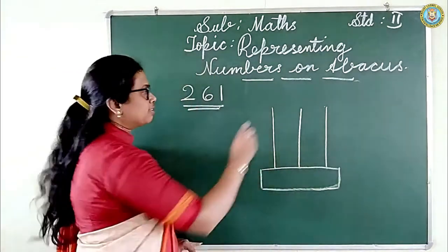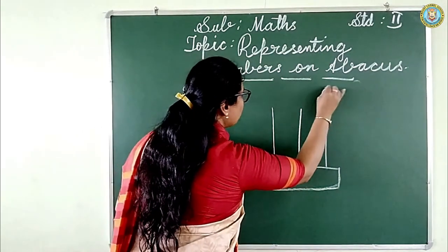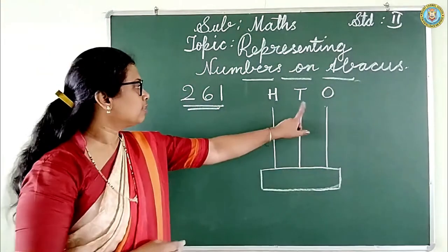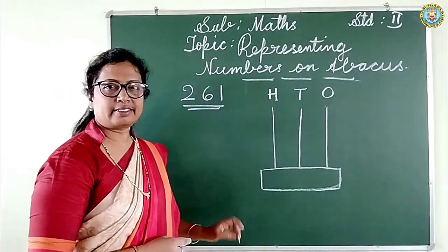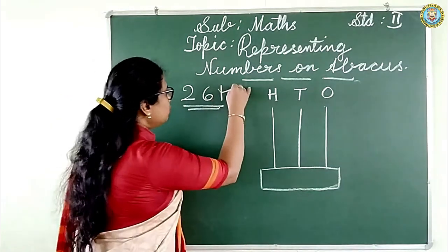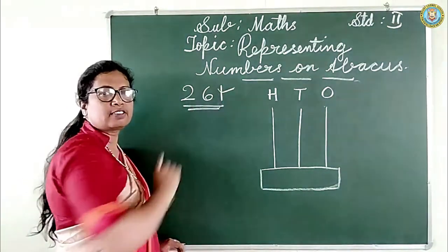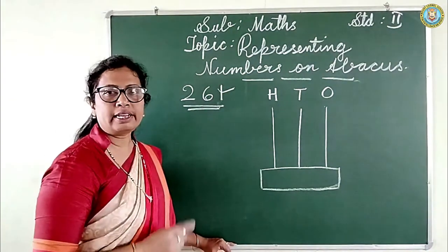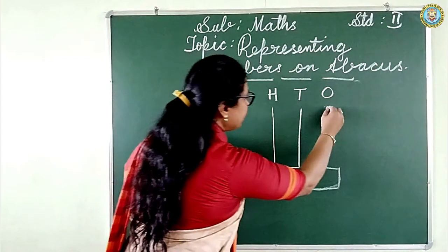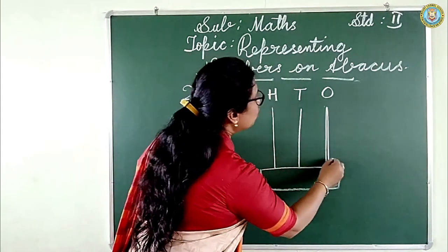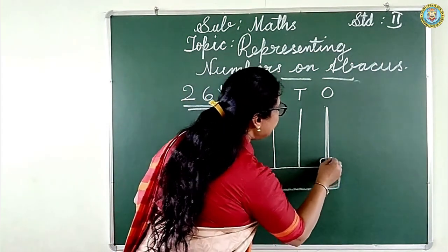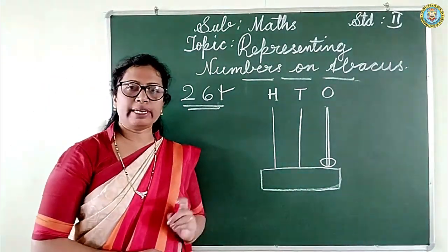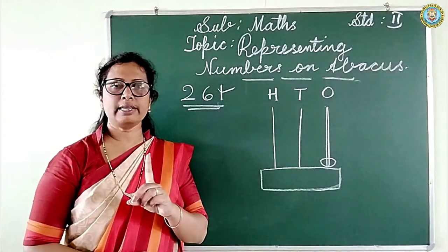Keep the place values from the right: ones, tens, hundreds. In the ones place the digit is one, so in the ones spike you have to put only one bead.